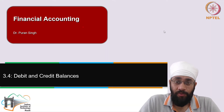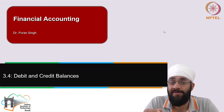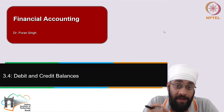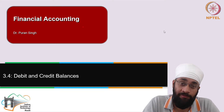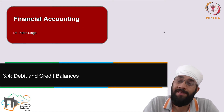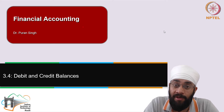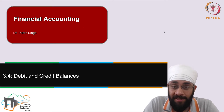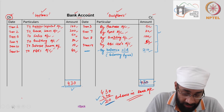Now you know how to post general entries into the ledger and how to close ledger accounts to find the closing balance. In this video, I am going to talk about two nomenclatures that we use for account balances. There are different types of accounts, and in some cases the balance is written on the debit side, in others on the credit side. There are specific names given to these two types of balances.